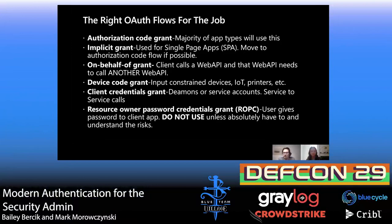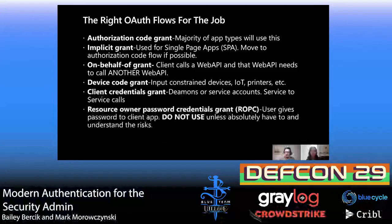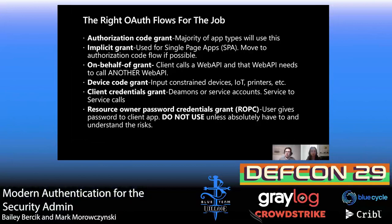There's also the resource owner password credential grant (ROPC flow), which is a legitimate flow but one we really don't want to use. If you look at the terms—resource owner, user, and password credentials grant—you're basically having the user give their username and password directly to the client app, which was one of the patterns Bailey talked about avoiding when moving to modern authentication. A customer didn't understand this and had a bunch of apps using ROPC flow; once they learned these flows properly, they moved everything to authorization code grant.